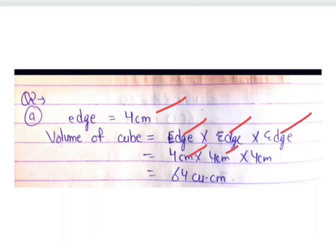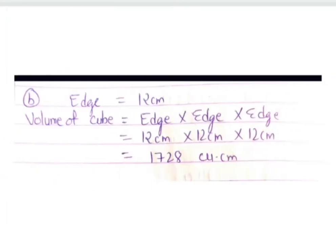Edge is 4 centimeters, so 4 cm × 4 cm × 4 cm. 4 × 4 is 16, and 16 × 4 is 64 cubic centimeters. Similarly, in part B the edge is 12 centimeters. Volume of the cube is edge × edge × edge, so 12 cm × 12 cm × 12 cm.